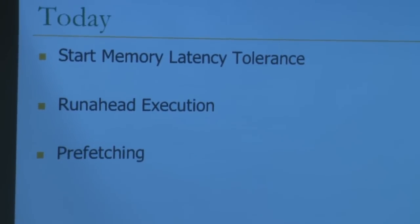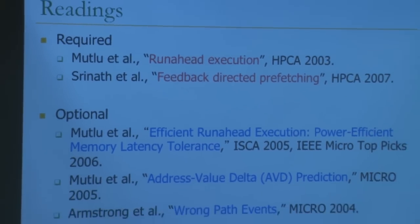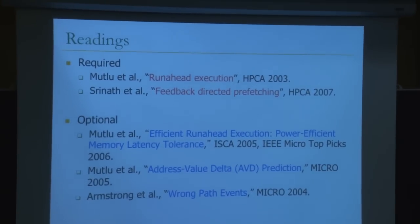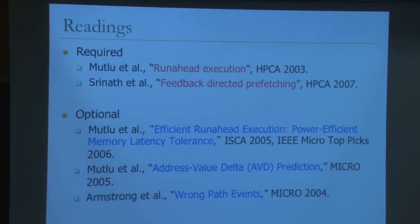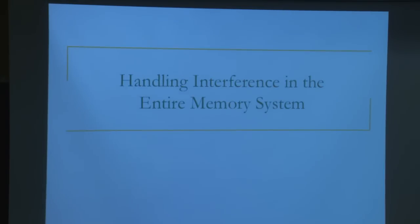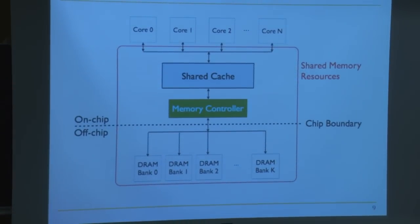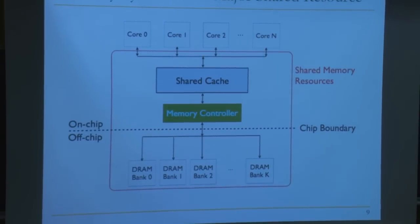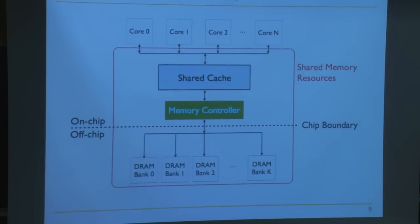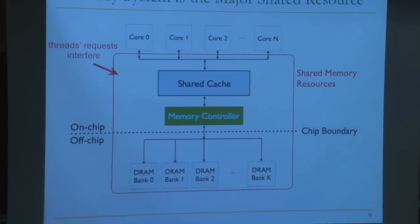Now let's start memory latency tolerance. We'll cover run-ahead execution — a form of prefetching — and possibly prefetching itself. There are required readings: the first paper I wrote, and a paper on prefetching, with optional papers as well. Before starting, I want to wrap up: interference is a problem in the entire memory system, including shared caches, the interconnect, the memory controller, and memory itself.